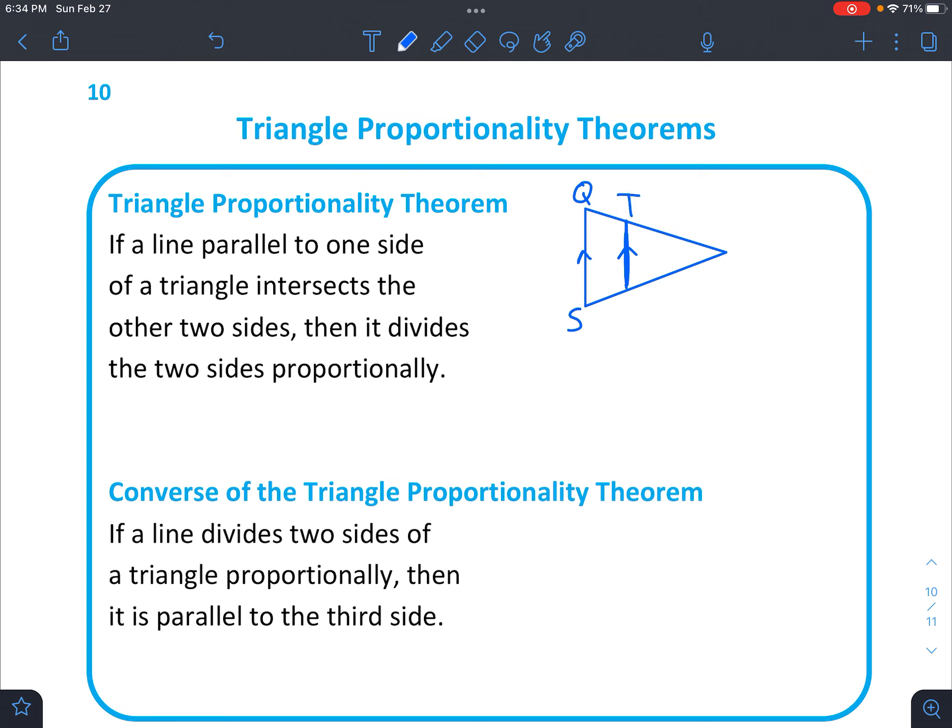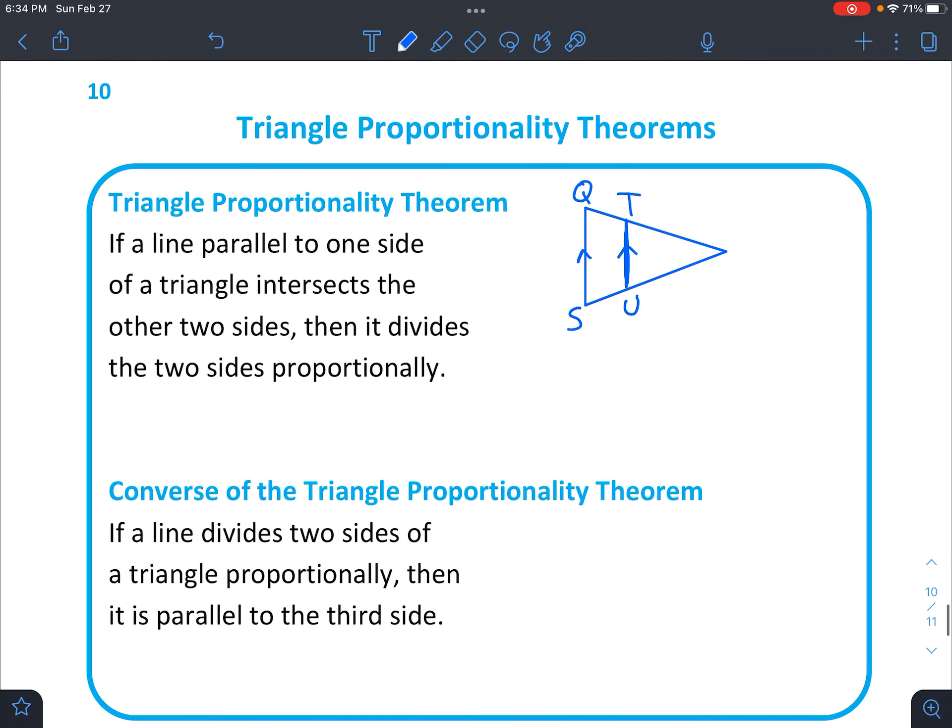We'll call this triangle SQTUR. Okay, so if a line parallel to one side of a triangle intersects the other two sides, so talking about these two sides, then it divides the two sides proportionally.